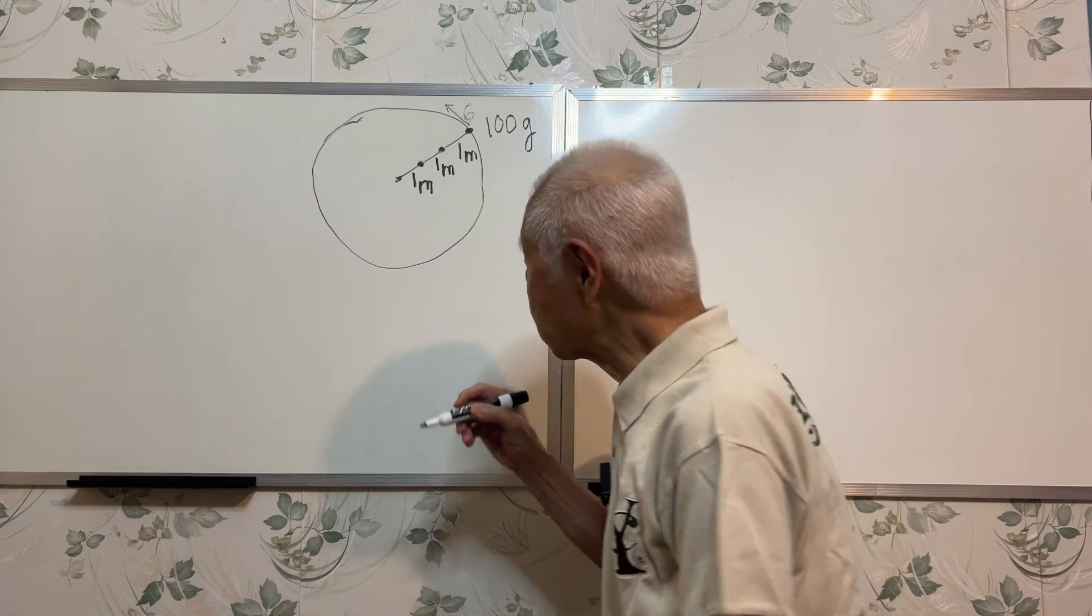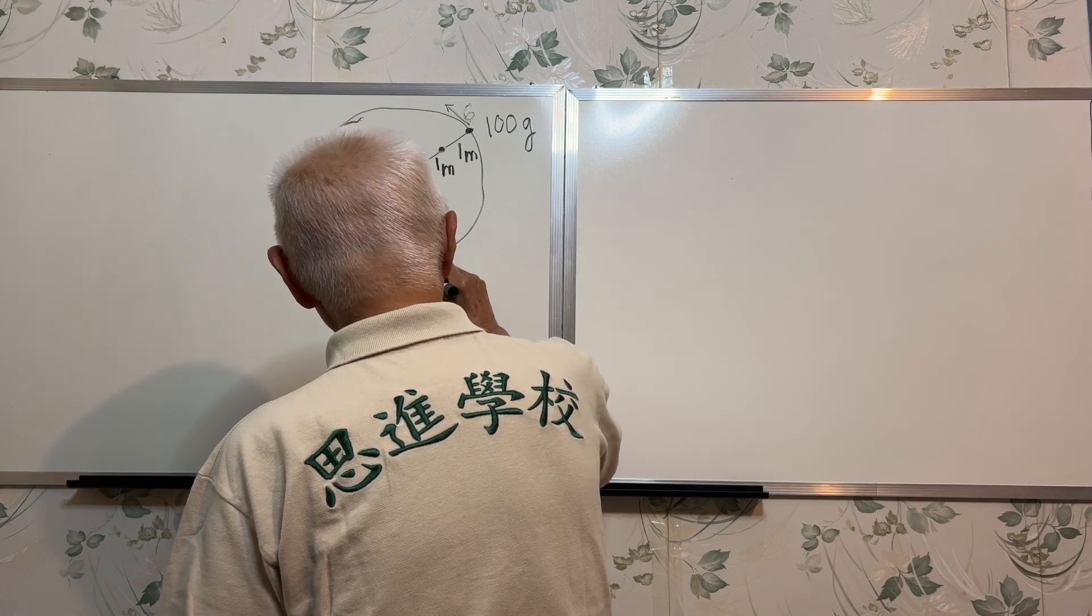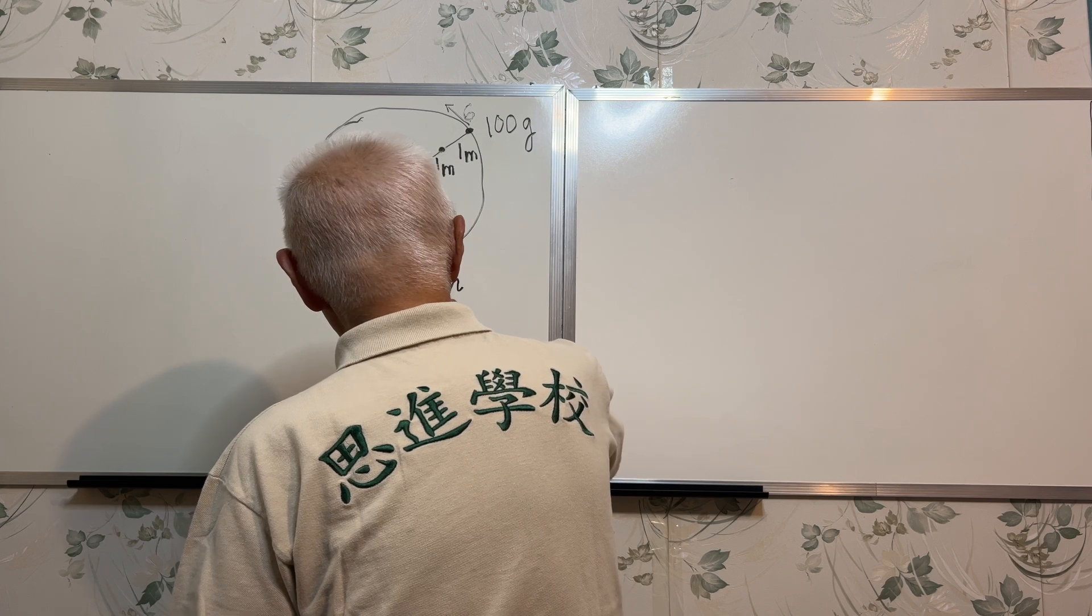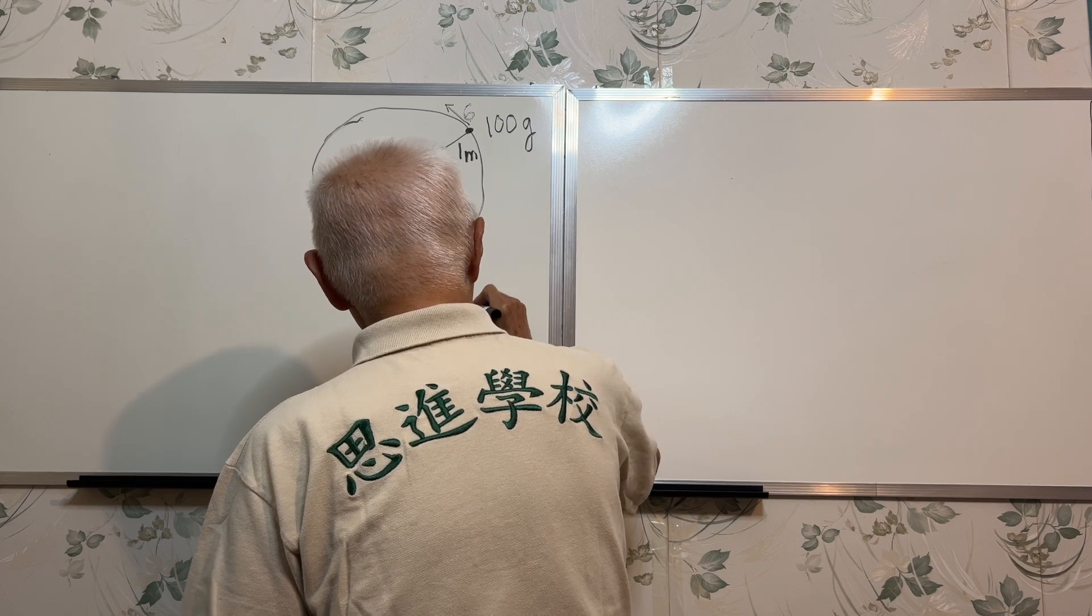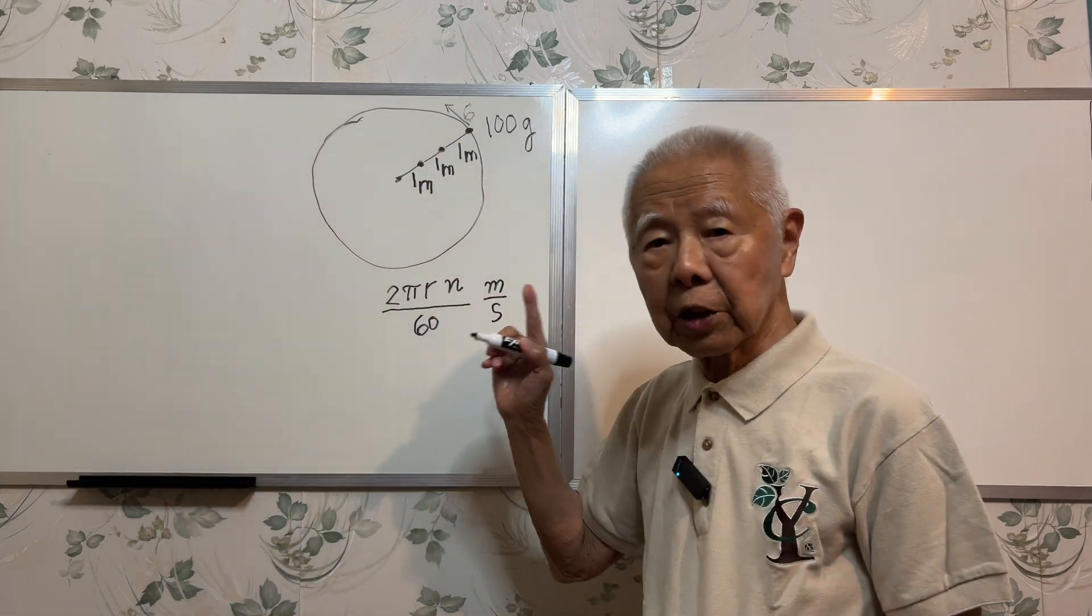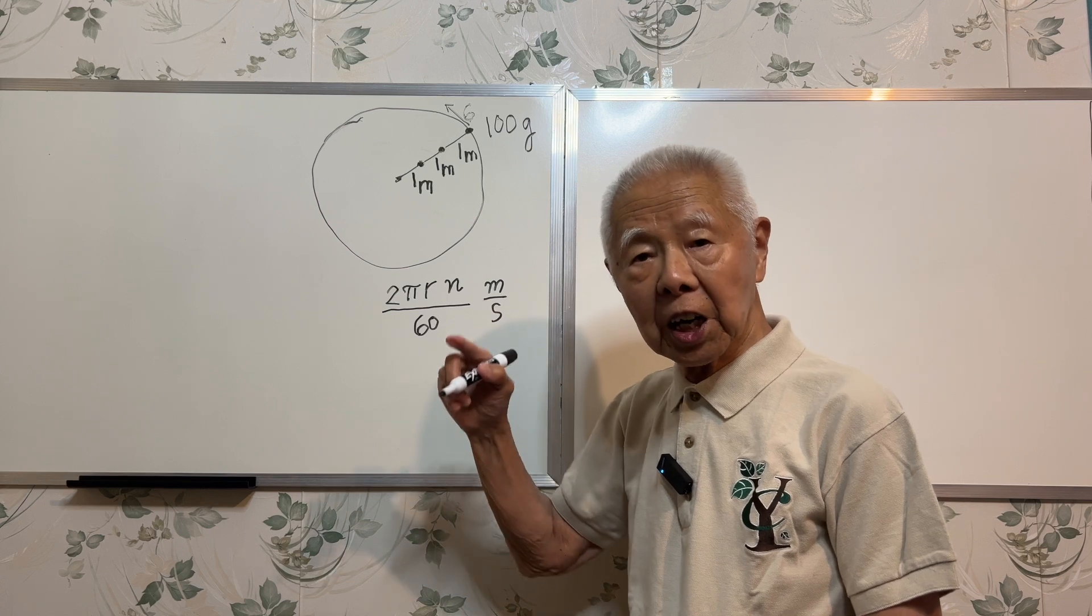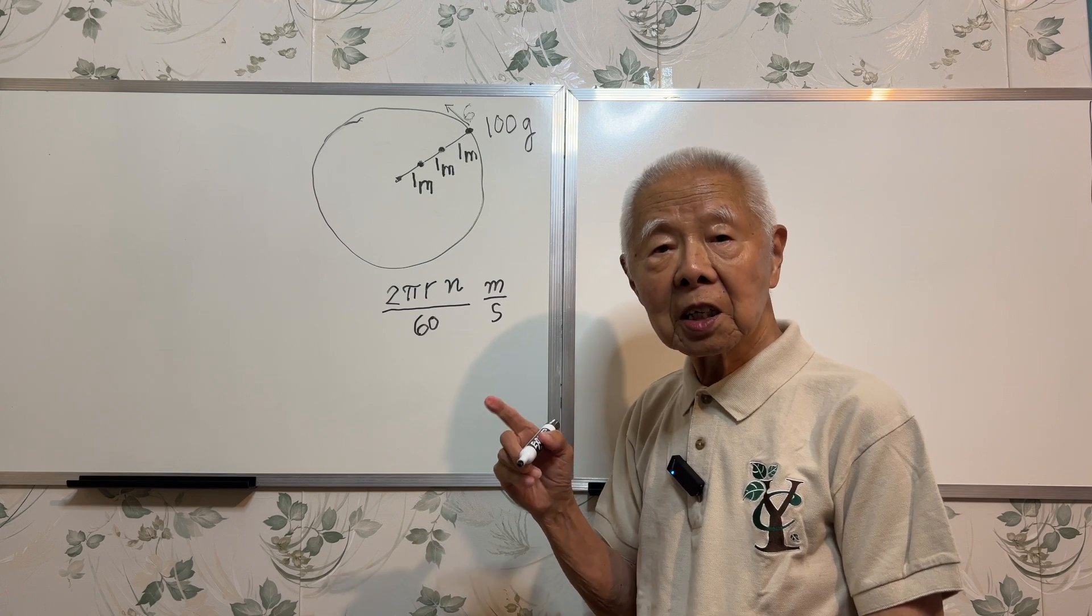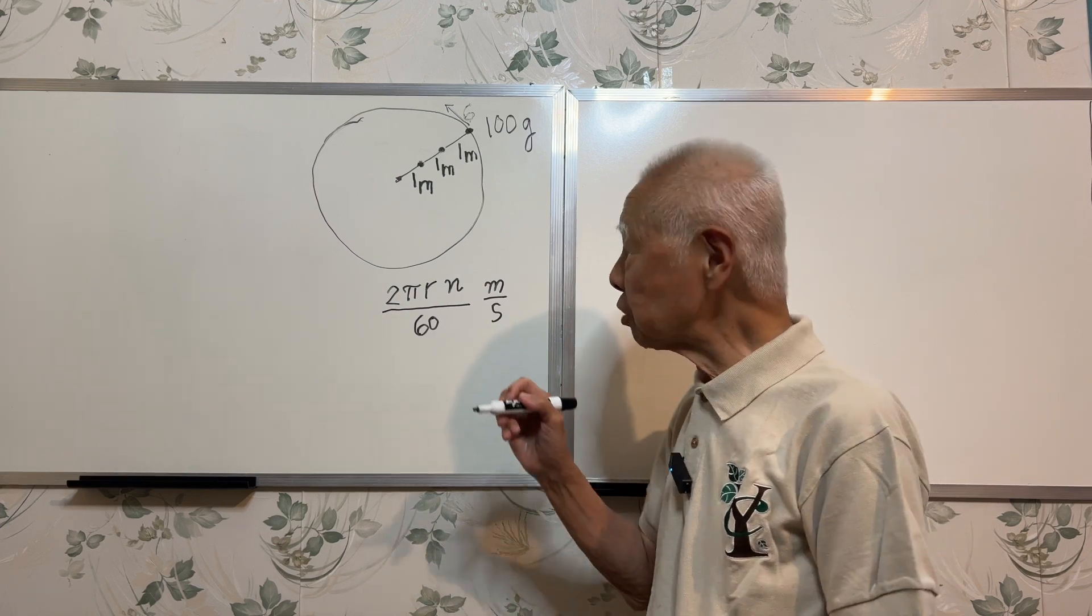For example, suppose the time is one minute. So the distance is 2πr times N. If the body rotates N rotations per minute, then during the N rotations the distance moved is 2πr times N, and the time is 60 seconds, so you divide by 60. Then this is the speed.